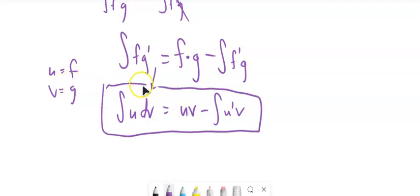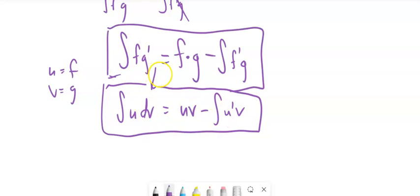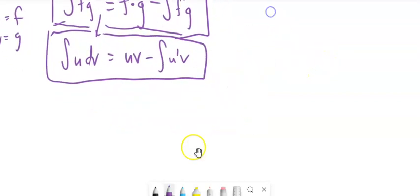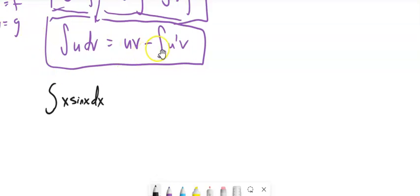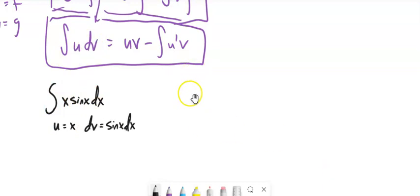Here's an example. I'm going to do some substitution. I'm going to let the first piece — this x piece — be u, and I'm going to let the second piece, sine x dx, be dv. So that means the derivative of u: derivative of x is just 1 dx. And the antiderivative of sine x dx is negative cosine.